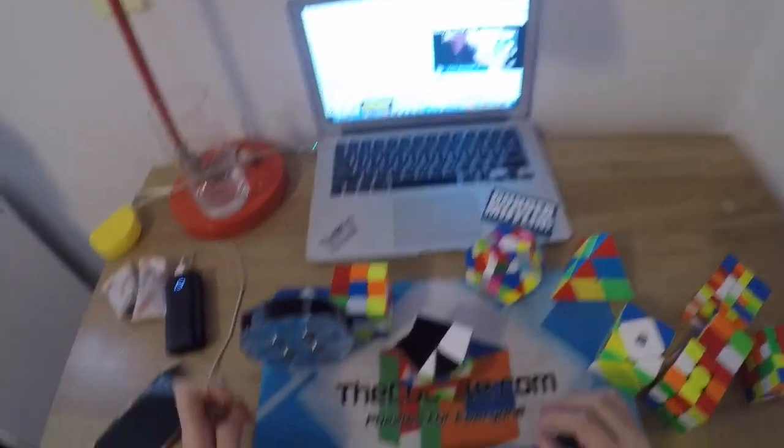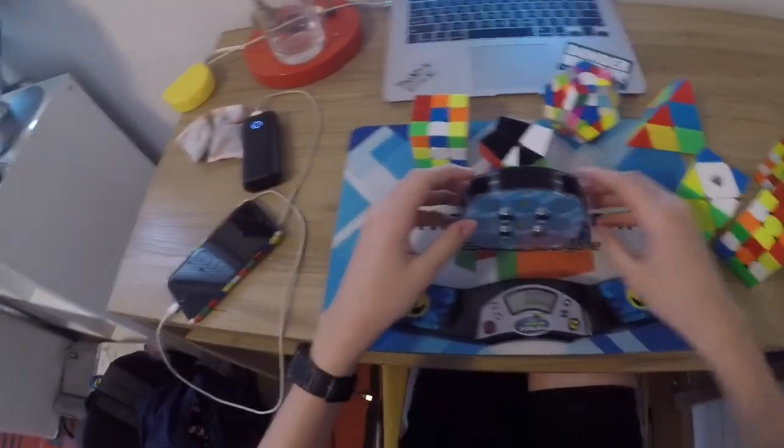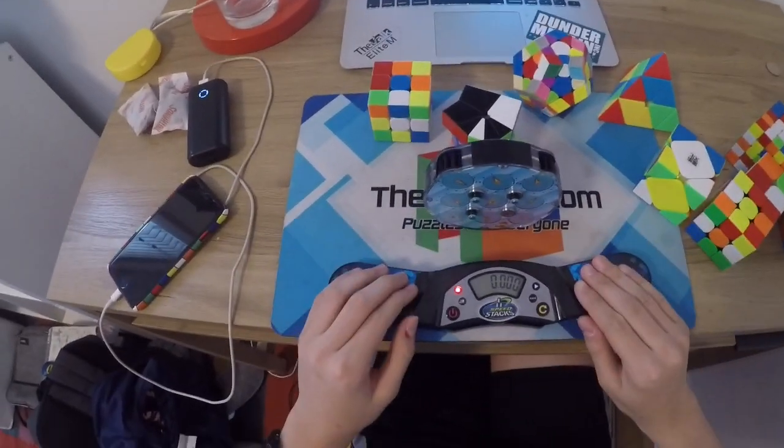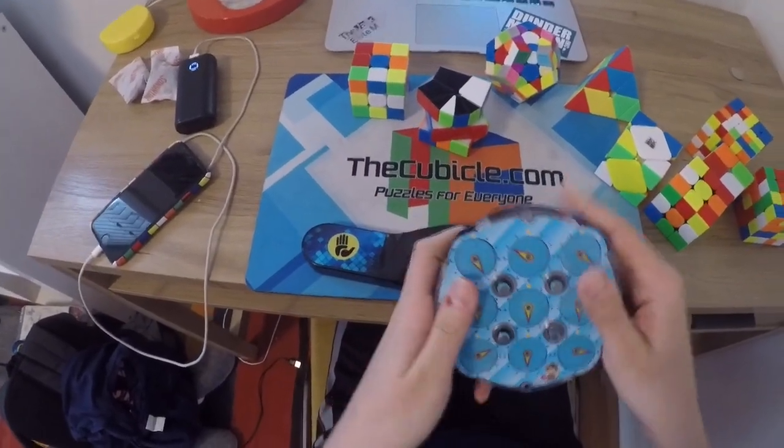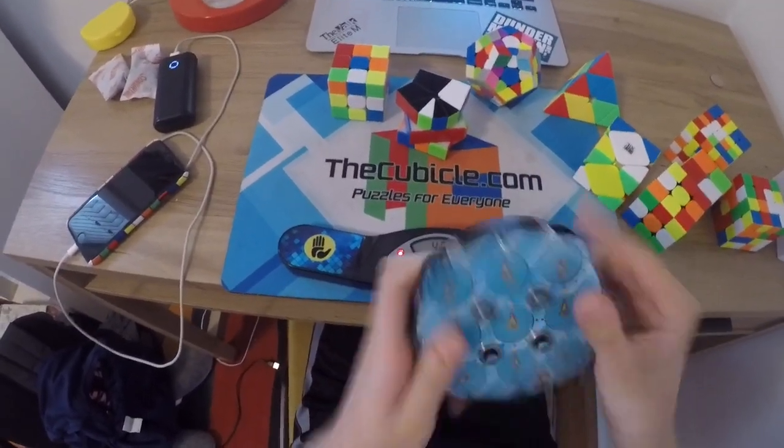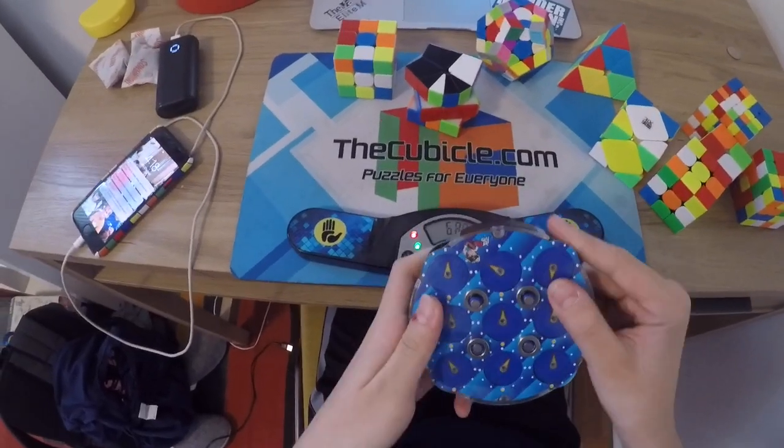That's insane. Ooh, 120. Oh my! 123 average for Zane. What? That is insane. That's I and R. That is insane. Wow. That is sub-Anthony's single right now.